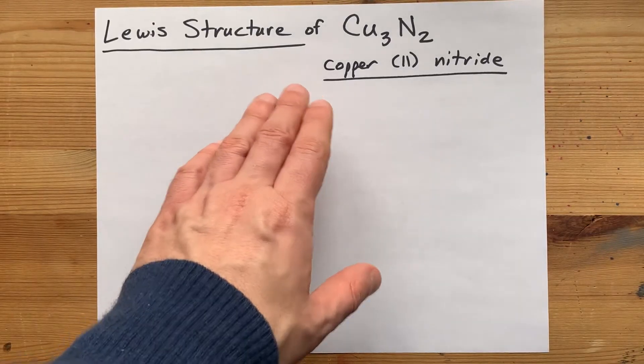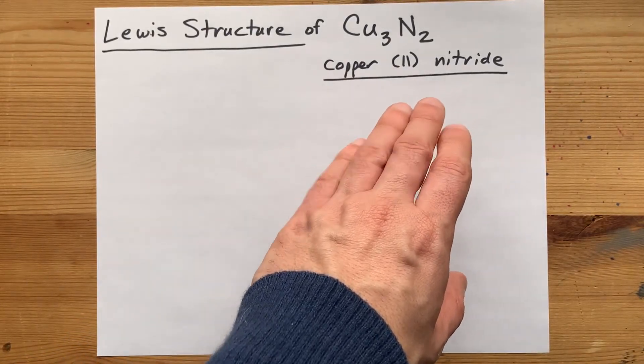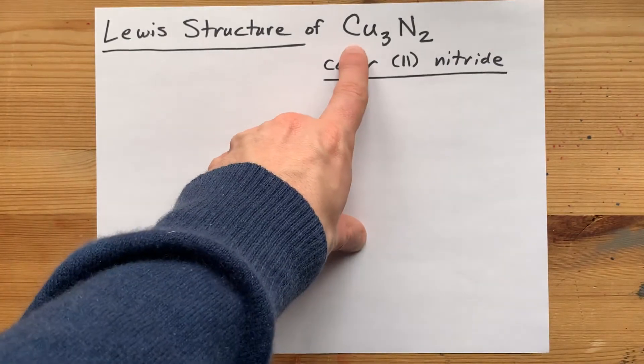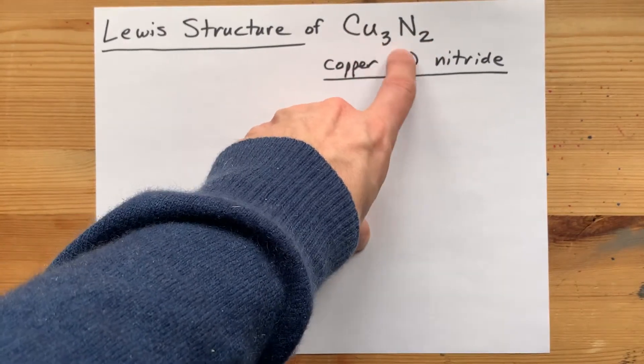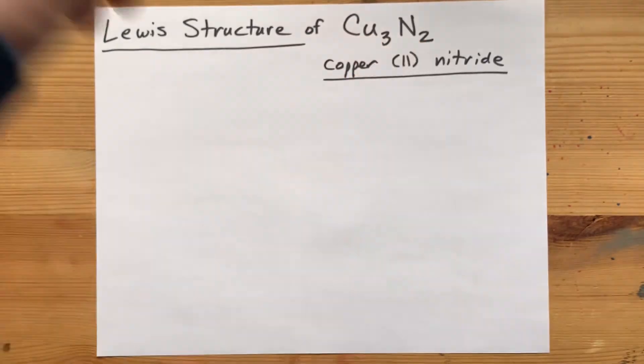The Lewis structure of copper to nitride will be annoying because the formula is Cu3N2. So we're going to eventually need three coppers and two nitrogens, but let's discover that on our own.